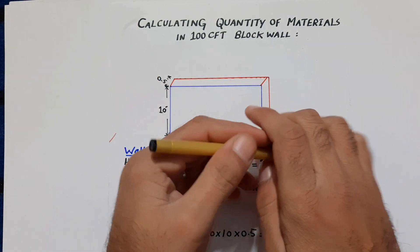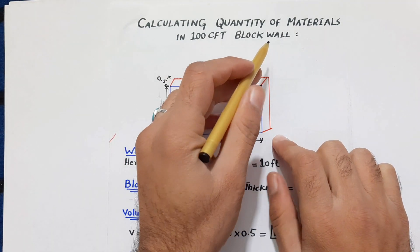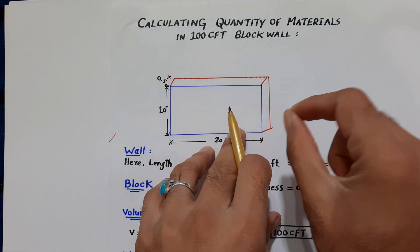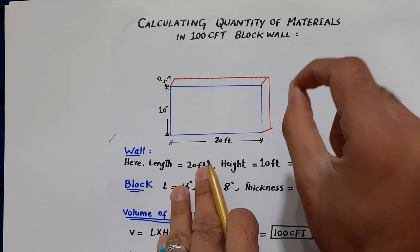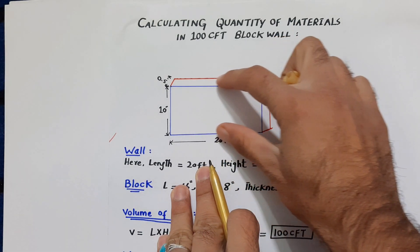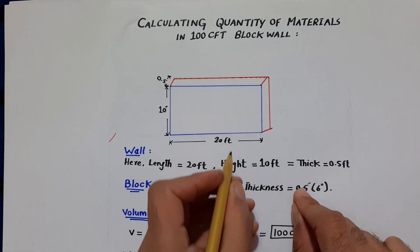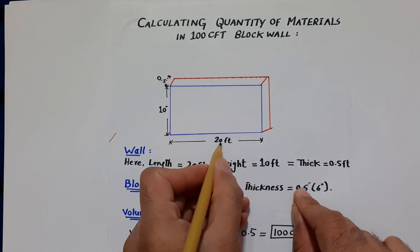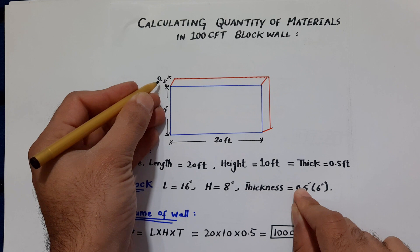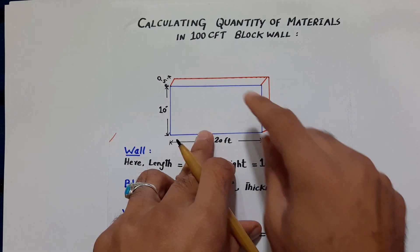Assalamu alaikum, beautiful people. Today in this short video lecture I will be calculating the quantity of materials in a 100 cft block wall. I will find the total quantity of cement blocks and cement mortar, and how many cement bags are required to cover this wall with cement blocks. The length of this wall is 20 feet, its height is 10 feet, and the thickness of the wall is 0.5 feet, meaning 6 inches.